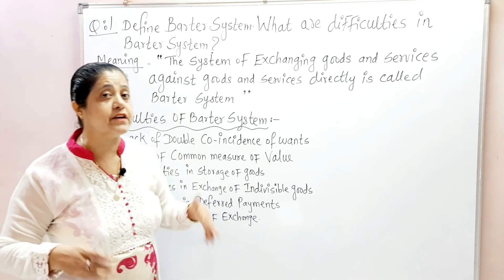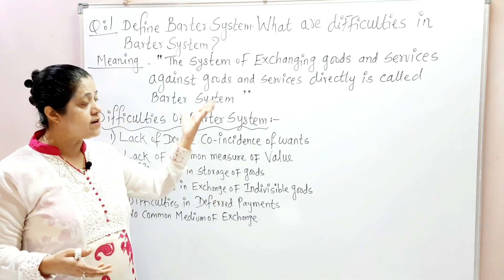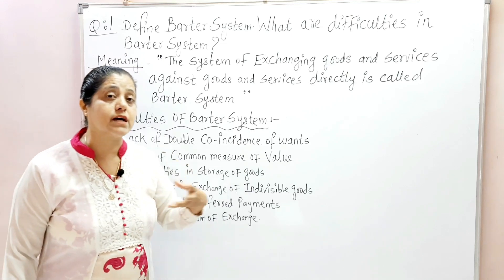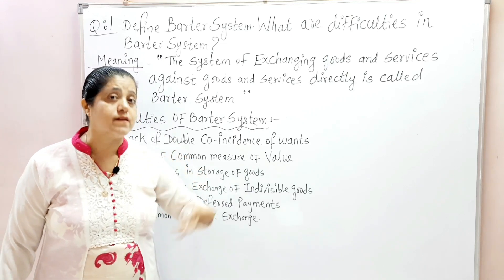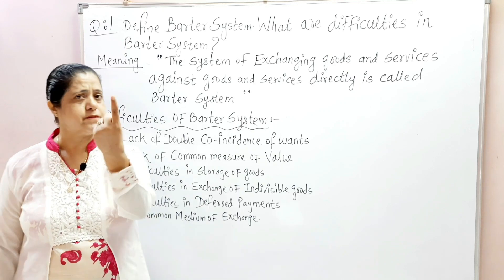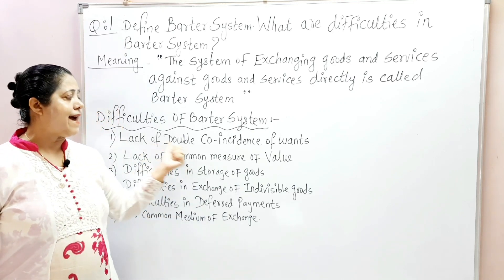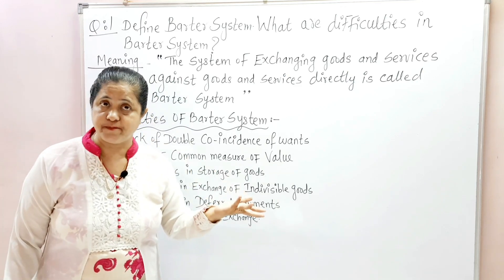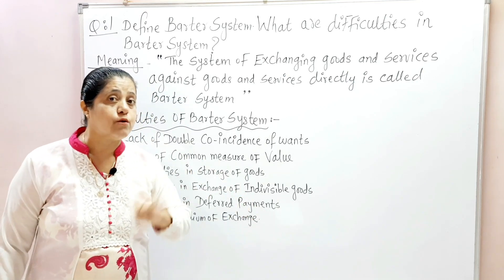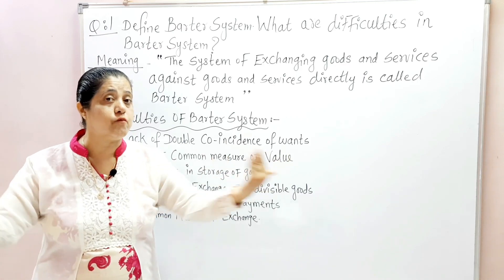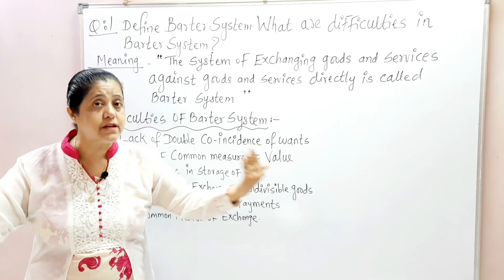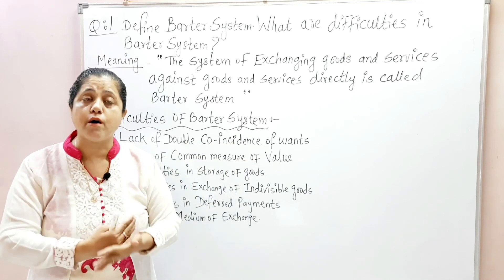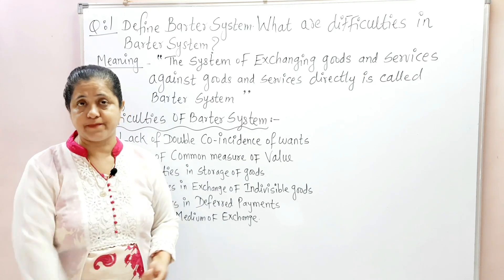Now let us discuss the difficulties of the barter system one by one. The first problem was the lack of double coincidence of wants. Lack means absence; double coincidence means both sides' wants should match. This was the most common problem in the barter system.